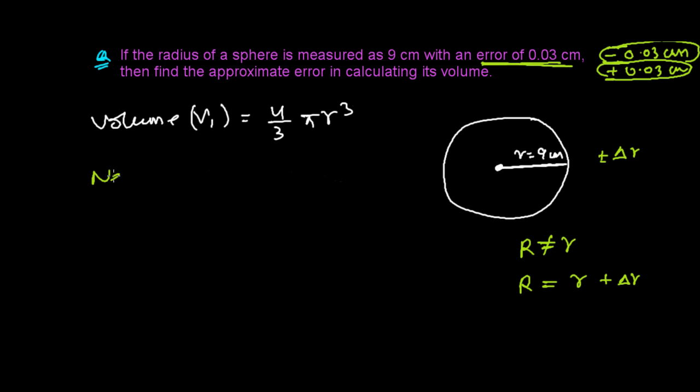The new volume after correcting the error will be again 4/3 π r³, where r is now the new r: (r + Δr)³. Now if we try to solve this question and find out the approximate error in calculating its volume by the calculus method, by the differential, it's very simple.